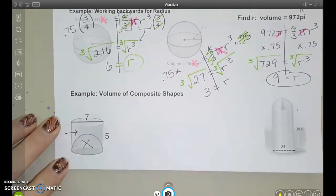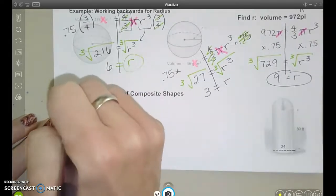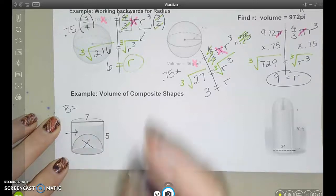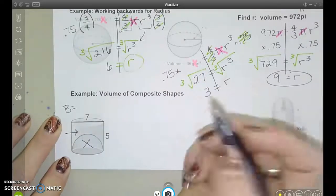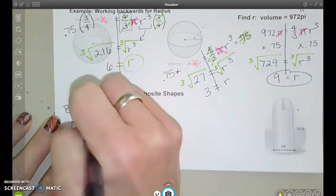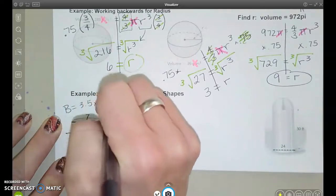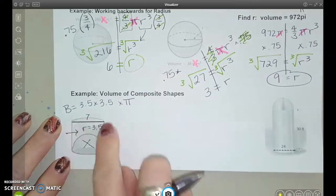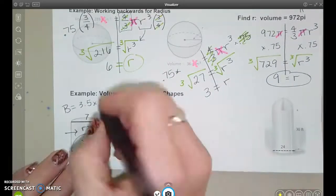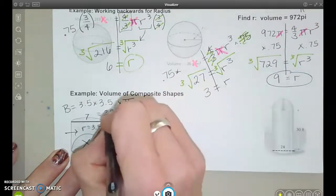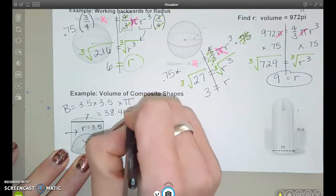So I'm going to start by looking at my circle. I'm going to write capital B, because I know this area of the circle, capital B, is going to be important for the cylinder and the sphere. So I'm going to go ahead and find that. I have a radius of 3.5, so 3.5 times 3.5 times pi, just to get the area of that circle, the base circle. And I got that comes out to 38.465.